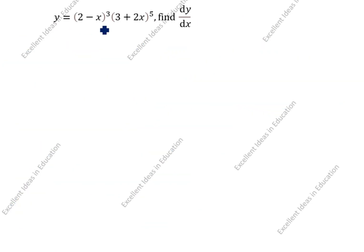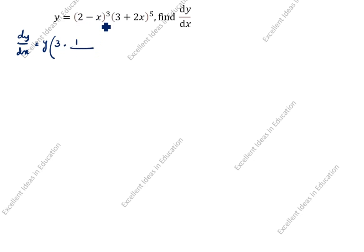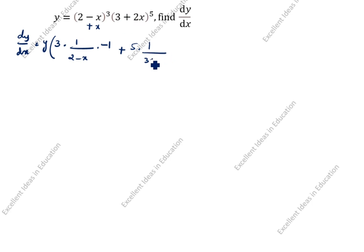Next question: y = (2−x)³·(3+2x)⁵. Find dy/dx. We will differentiate with respect to x using the shortcut trick. dy/dx equals y as it is, open the bracket. Power 3: write 3 into 1/(2−x) in denominator, then multiply by the differentiation of (2−x) which gives −1. Power 5: write 5 into 1/(3+2x), then multiply by the differentiation of 2x.